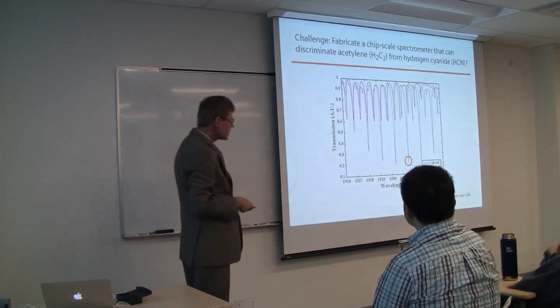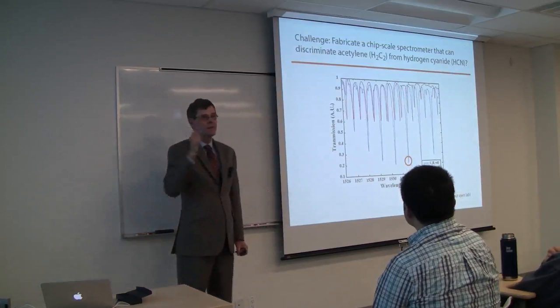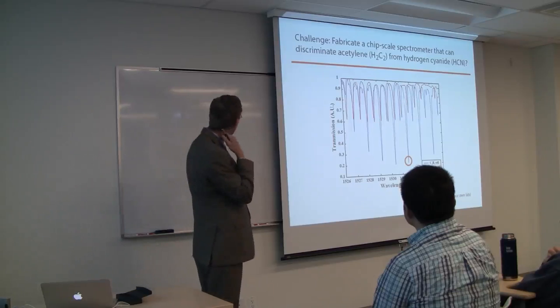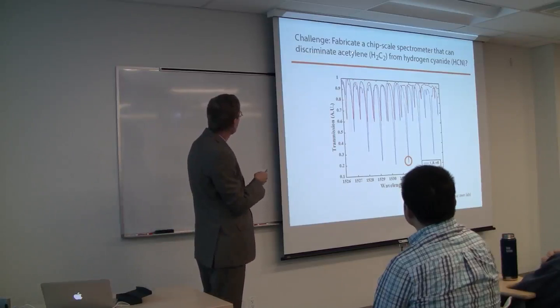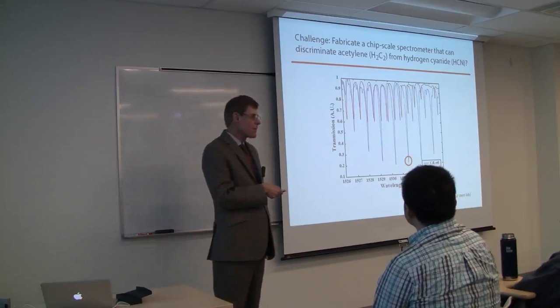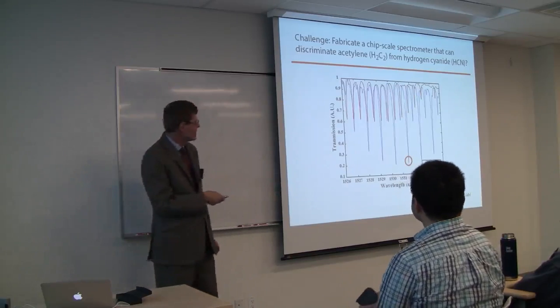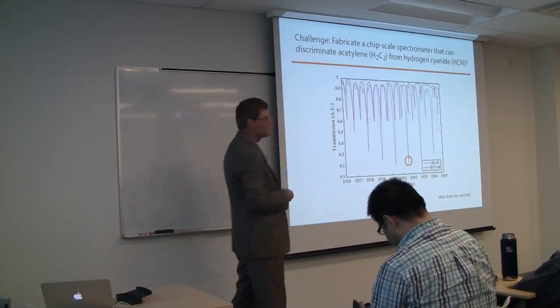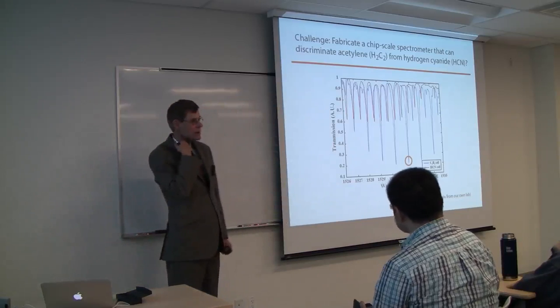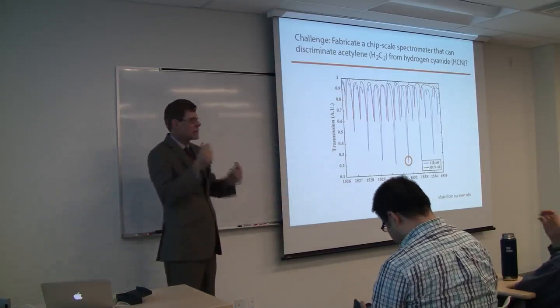Can we do something useful? Can we fabricate a chip scale spectrometer that can discriminate between acetylene and hydrogen cyanide? Nobody wants to breathe acetylene, but it's not a deadly poison, unlike hydrogen cyanide. If you look at the spectra of the two, they're very similar because it's the CH stretch bonds that are responsible for these spectral features.